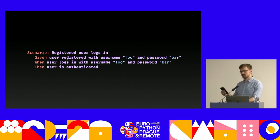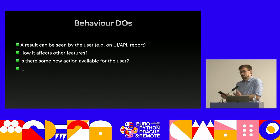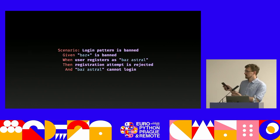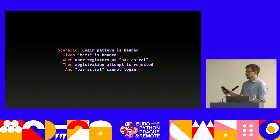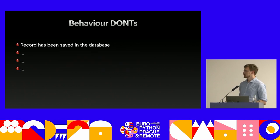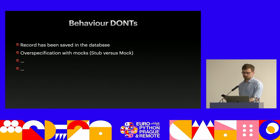A visible behavior after registration is to log in with that username and password. That's how we specify behavior — what the user can do, how they can see it. For a banning feature, the scenario would be: given a pattern is banned, when the user registers matching that pattern, then registration is rejected and the user cannot log in. Everything visible from outside the system.